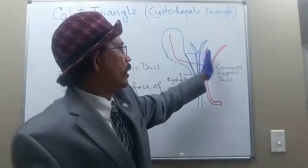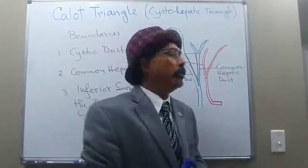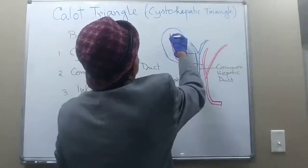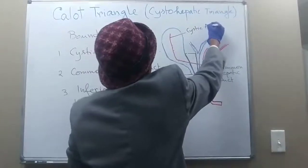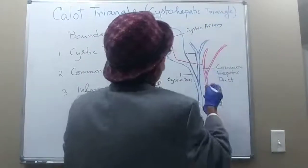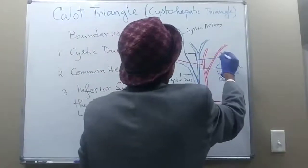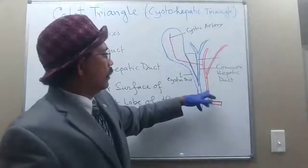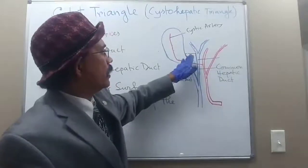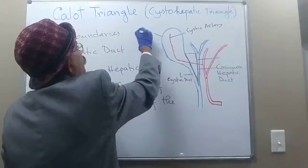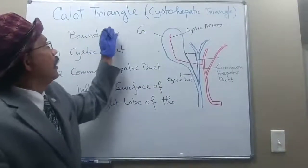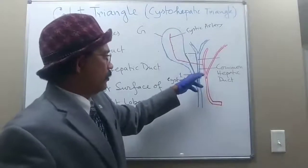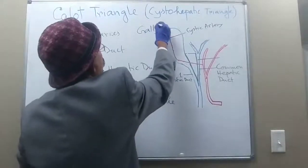What is the clinical importance of this Calot's Triangle? We have a lot of anomalies that may happen in around 25% of the population. The cystic duct may be very small, and this is the cystic artery. We have blood vessels that might have anomalies. By studying the Calot's Triangle and dissecting the structure, the surgeon can avoid damage to the cystic duct or the blood vessel.